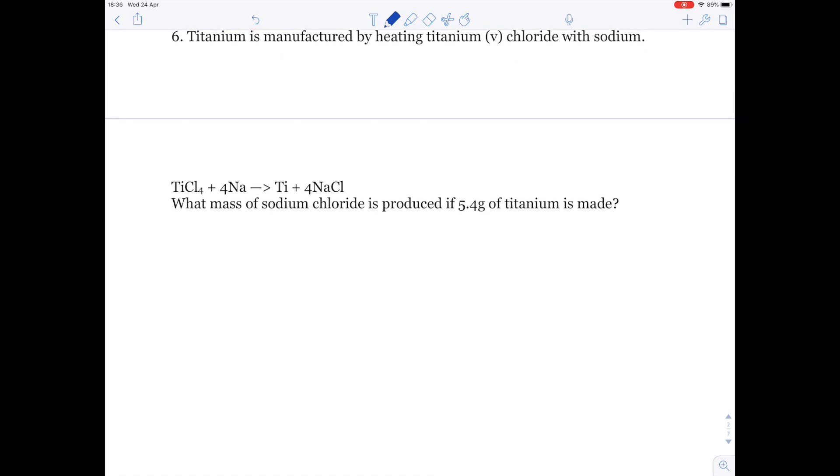Six: Titanium is manufactured by heating titanium(IV) chloride with sodium. According to this equation, what mass of sodium chloride is produced if 5.4 grams of titanium is made? I like to write out the balance symbol equation again, so I can easily access the information. Use the table format again.